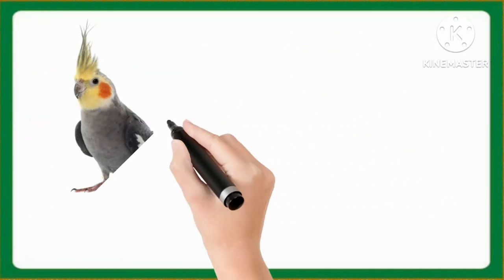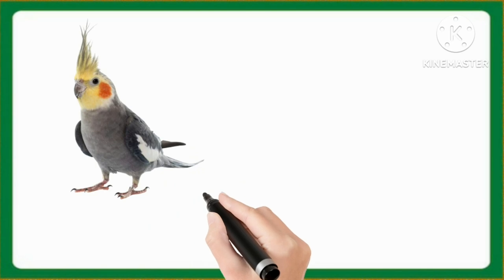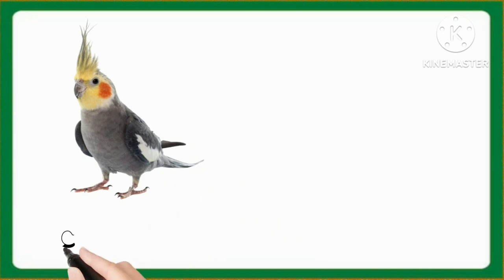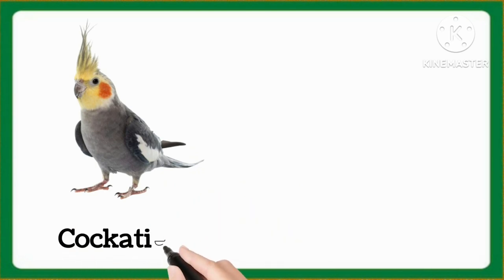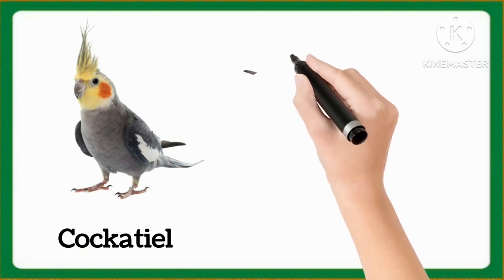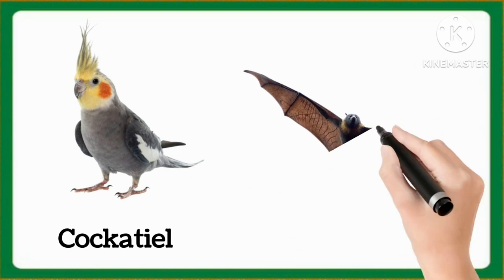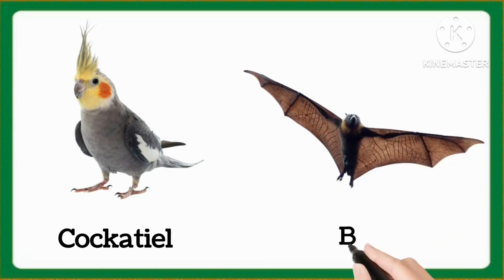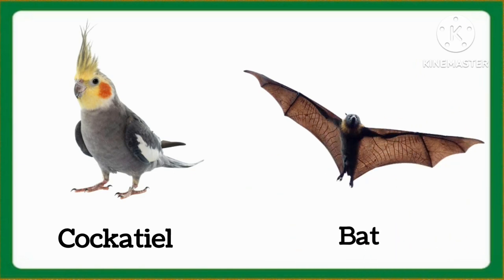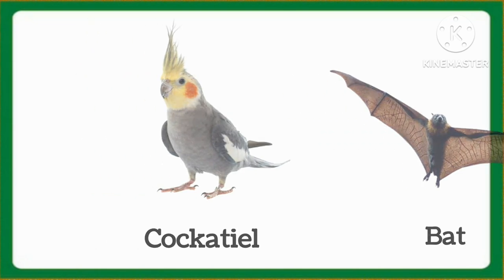And now tell me which word is this, kids? This is corncrack. This is cockatiel. Cockatiel. And which word is this, kids? This is bat. Bat.